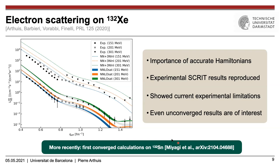More recently, colleagues from the TRIUMF group put out a paper on the arXiv doing in-medium SRG calculations on tin-132. Using a novel normal ordering approach to cleverly incorporate three-body forces, they achieved the first converged calculation on tin-132. This really shows that the frontier of the ab initio mass domain is evolving very quickly and people are already tackling these challenges.